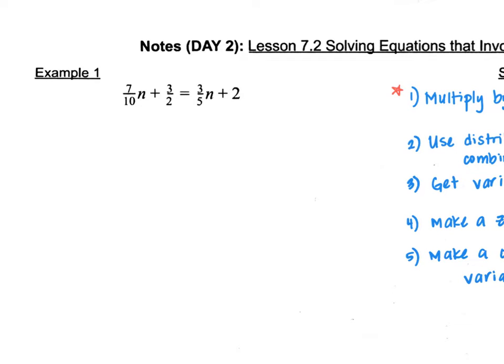In example 1, 7 tenths n plus 3 halves equals 3 fifths n plus 2. So the first thing is to identify the LCD. The LCD has to do with the denominators, least common denominators. So we have 10, 2, and 5. And you can think of what number does 10, 2, and 5 go into. So you're thinking of a number that divides by 10, 2, and 5 evenly. Or you can think of least common multiple. So the multiples of 10 are 10, 20, 30, 40, 50.